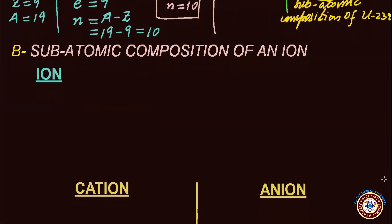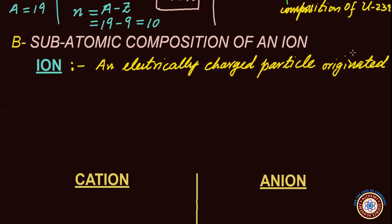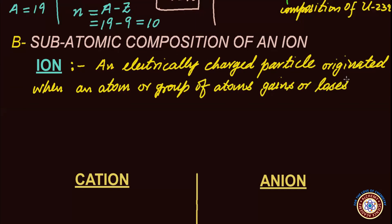Now let us move on to the subatomic composition of ions. An ion is defined as an electrically charged particle formed when an atom or group of atoms gains or loses electrons. We will discuss only simple ions, which originate from single atoms. During ion formation, nothing enters or leaves the nucleus, so Z and A remain the same as the parent atom. Only the number of electrons changes.